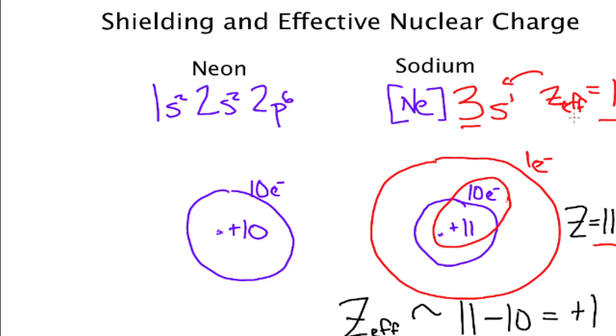What effect does this have? That means that valence electron that sodium has that neon doesn't have is not held on very tightly, and it's not held on very tightly because it's only sensing about one proton in the nucleus. So sodium is going to be much more like hydrogen which also only has one proton.